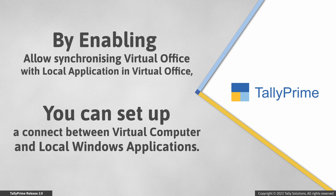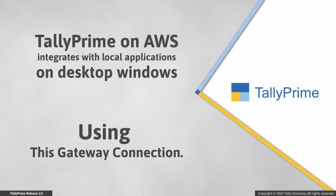Thus, to integrate Tally Prime on AWS with local applications, a gateway connection is set up between the Virtual Computer and local Windows applications. Tally Prime on AWS integrates with local applications using this gateway connection to exchange data. Thus, you can continue to have third-party applications on local Windows and allow exchange of data with Tally Prime on AWS.